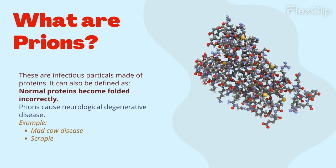What are prions? These are infectious particles made of proteins. They can also be defined as normal proteins that have become folded incorrectly. Prions cause neurological degenerative diseases, like mad cow disease and scrapie.